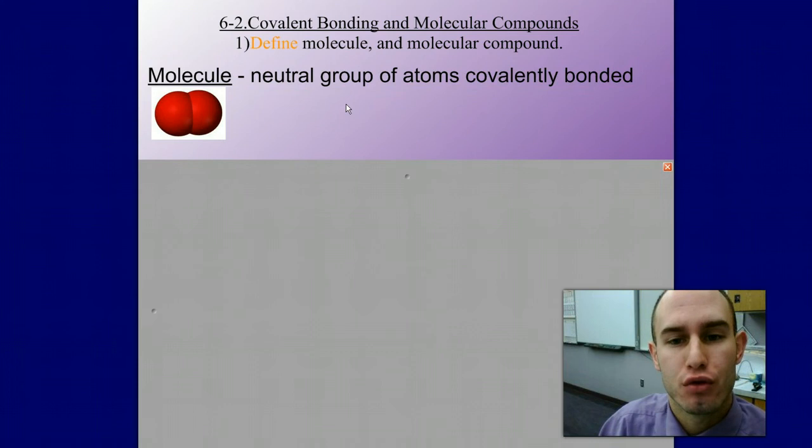A molecule is a neutral group of covalently bonded atoms. This is most likely going to occur between a metal and a non-metal. Here is an example, this is a space filling model where we have two atoms represented as spheres basically stuck together and that is right there where our bond is occurring.